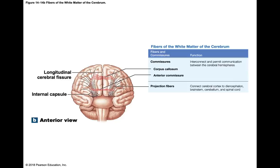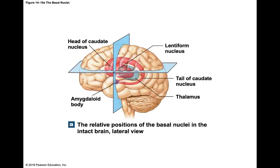Projection fibers link the cortex of the cerebrum to the diencephalon, brainstem, cerebellum, and spinal cord — basically linking the cortex to the rest of the brain. The entire collection of these projection fibers is known as the internal capsule. The basal nuclei is gray matter inside the white matter, which is inside the gray matter of the cerebral cortex.